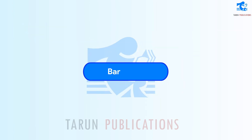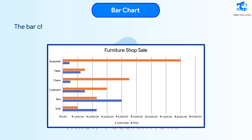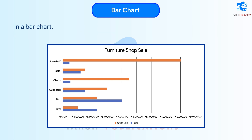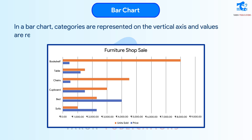Bar Chart: The bar chart displays the data in the form of long bars that are plotted horizontally on the chart area. In a bar chart, categories are represented on the vertical axis and values are represented on the horizontal axis.